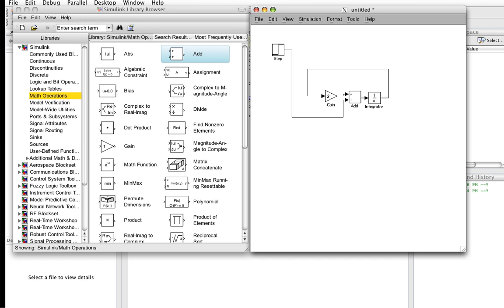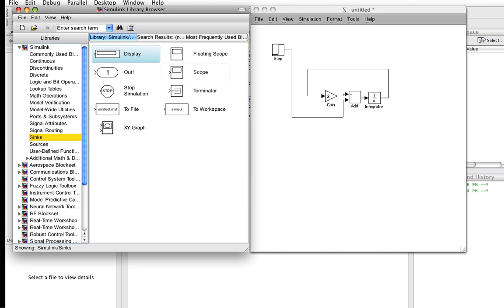The last thing we want to do is be able to see what the output looks like. So we'll go to the Syncs menu, get a scope, and wire the scope to the output. So now we should be at the point where we can run the simulation and see what the output of our system that's represented by this differential equation will be.